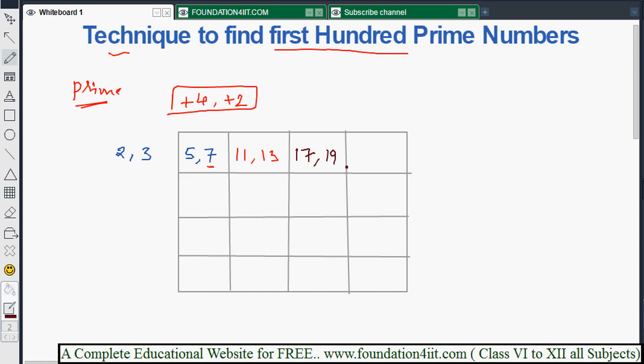For 25 plus 4 is 29, plus 2 is 31. For 31, plus 4 is 35, plus 2 is 37. For 37, plus 4 is 41, plus 2 is 43. Just keep adding 4 then 2.